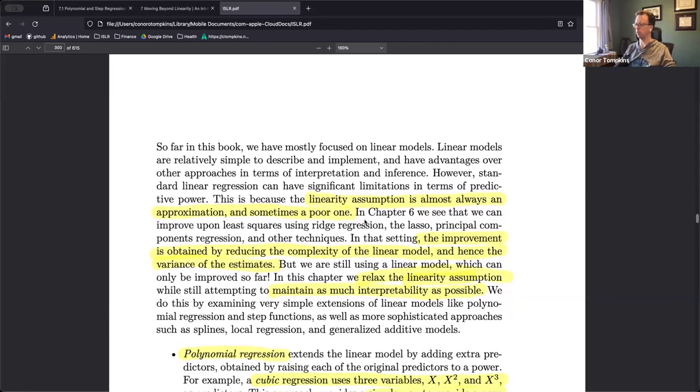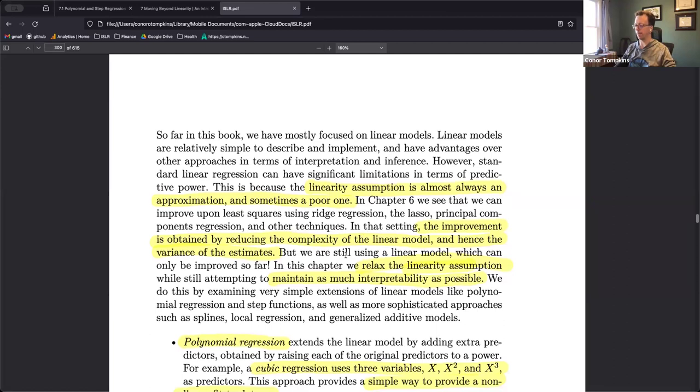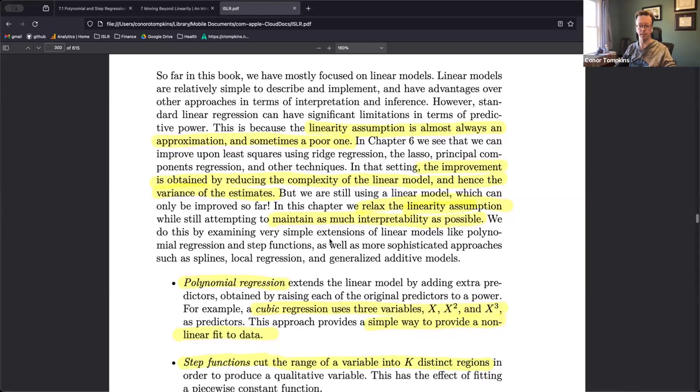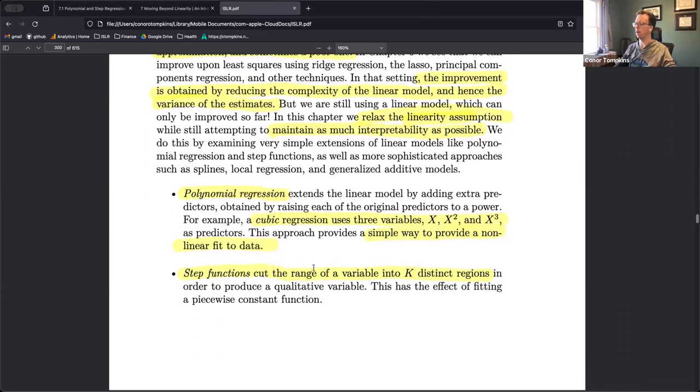The assumption of linearity is almost always wrong but it's useful. There's some trade-offs there. The variance of the estimates is a problem that we can run into in some cases. But if you can relax the strength of the assumptions, then we can gain some accuracy and maintain interpretability. There's a couple different methods that they go through here in this chapter.